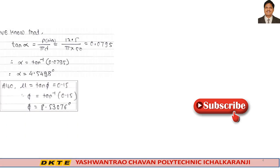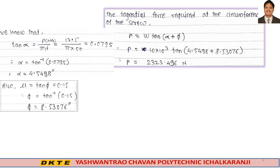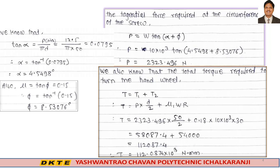Next, we also know that the coefficient of friction mu equals tan phi equals 0.15. From this we calculate phi equals tan inverse of 0.15, and phi becomes 8.53076 degrees. After that, the tangential force required at the circumference of the screw is P equals W tan(alpha + phi). We calculate and the force required comes to 2333.496 Newtons.